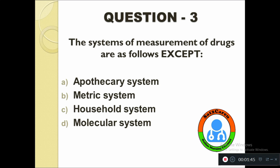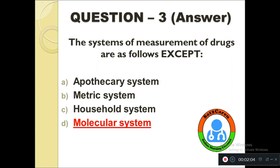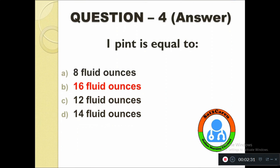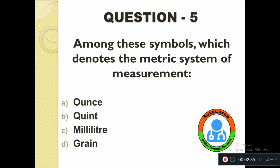Question number three: The systems of measurements of drugs are as follows except — option A: Apothecary system, B: Metric system, C: Household system, D: Molecular system. The correct answer is Molecular system. Question number four: One pint is equal to — option A: 8 fluid ounces, B: 16 fluid ounces, C: 12 fluid ounces, D: 14 fluid ounces. The correct answer is 16 fluid ounces.